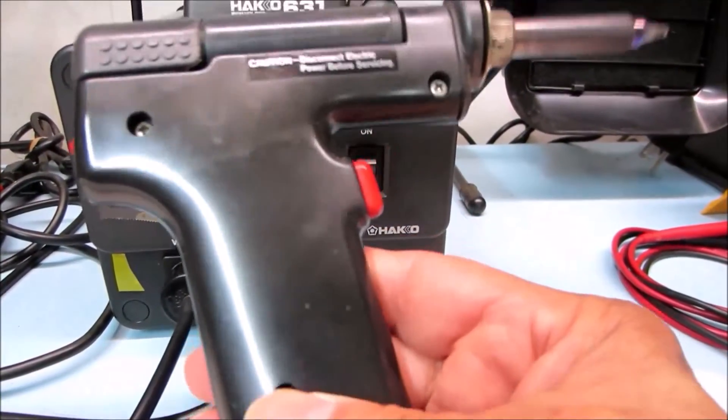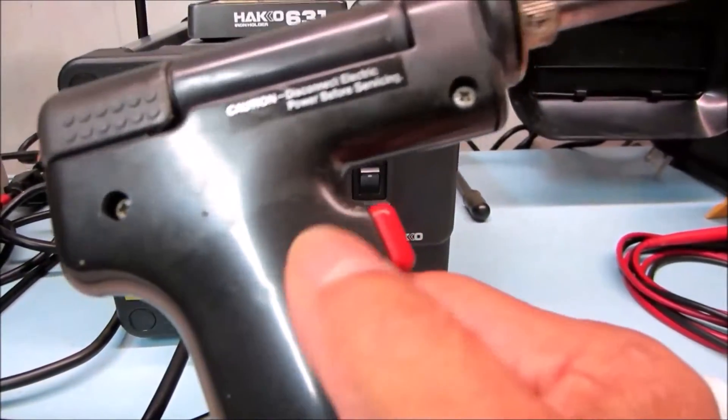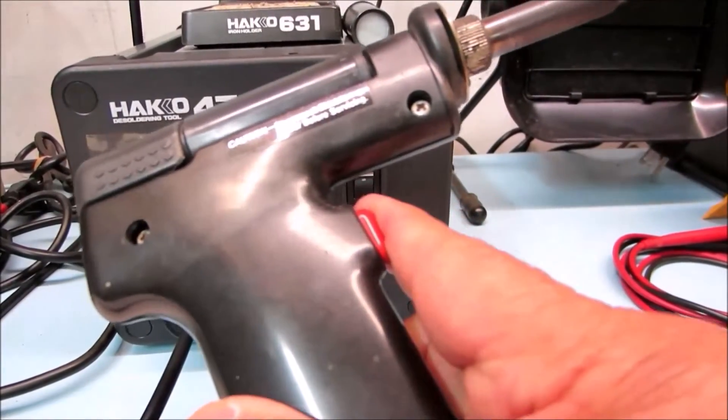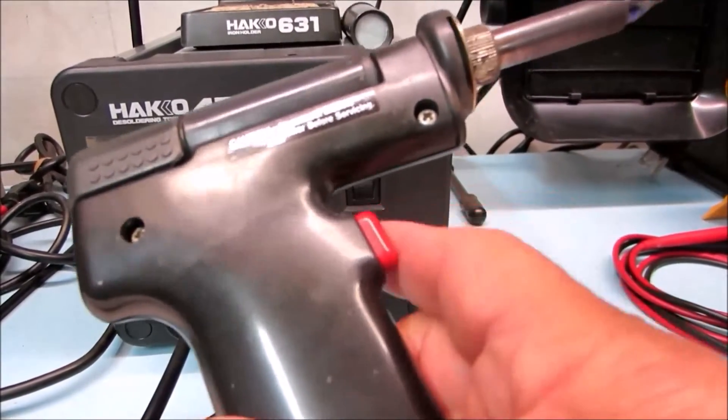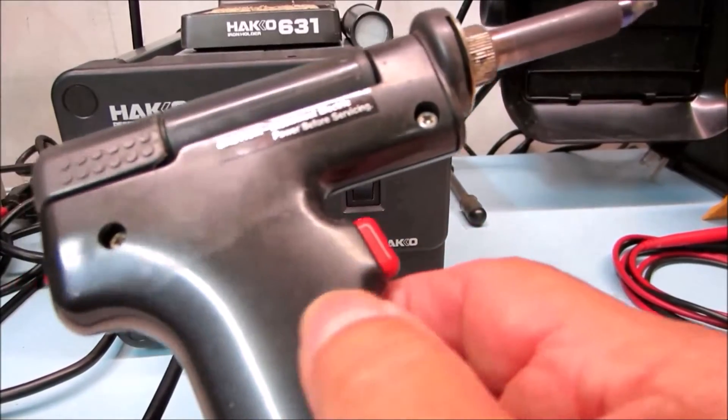So I took the gun apart. Very easy. There's just three screws here. But the switch back here was working perfectly, meaning that when you push the trigger, it closed. When you released the trigger, it opened, and went infinite resistance.